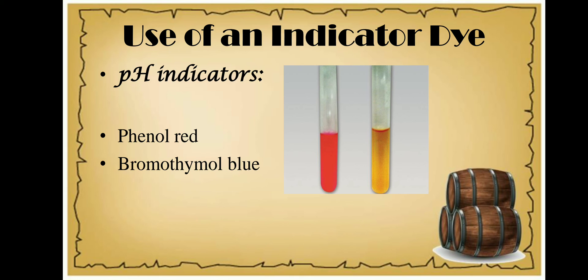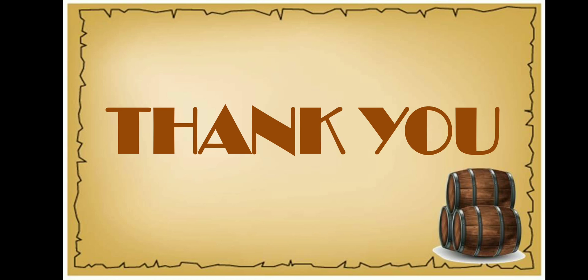Using a pH indicator we can decide whether the organism is producing acids or alkali and detect the relevant organisms. For bromothymol blue, the color of the media initially will be green; if organisms are producing alkali, the pH changes and the color turns blue. That is all about the primary screening technique. In my further videos we will look into the secondary screening methods.